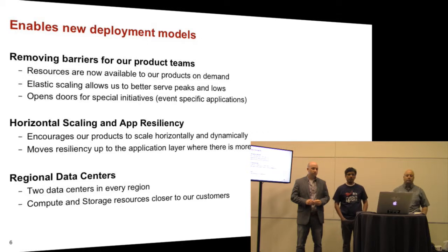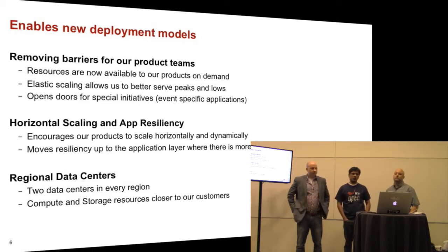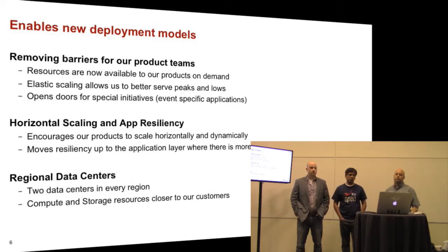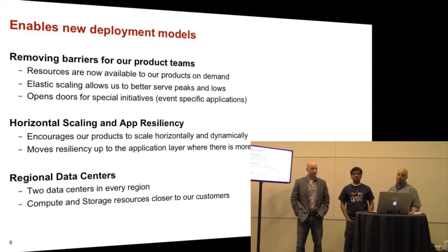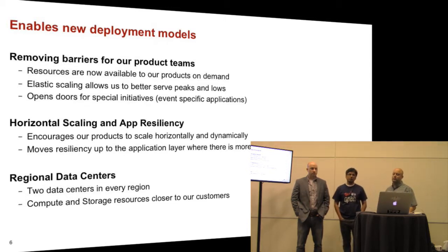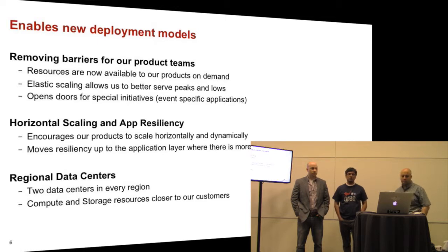We have two kinds of data centers at Comcast: large national data centers where most back-end services go, and regional data centers which are much closer to our customers. The regional data centers serve specialized functions — they're used when we need a lot of bandwidth out to customers, or when we have latency requirements where we need to be physically close to the customers.